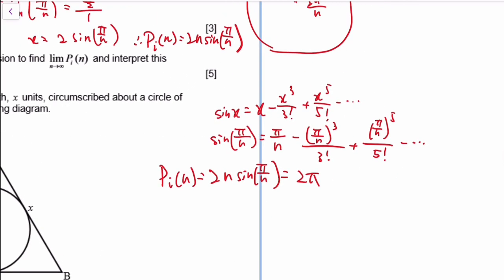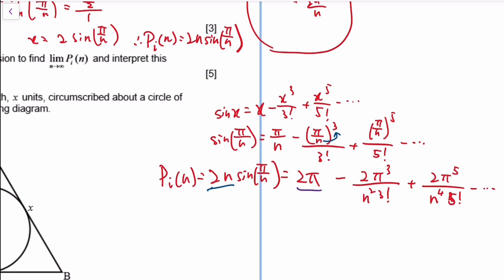So it's 2n times that. If you multiply the first term by 2n you get 2π. If you multiply the second term, you get −2π³/(n²·3!). The next one will be 2π⁵/(n⁴·5!). Please don't tell me the answer is just 2π — the perimeter of a circle of radius 1 is 2π.